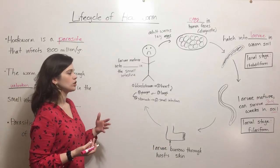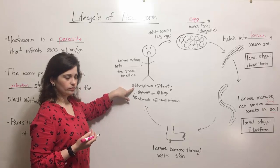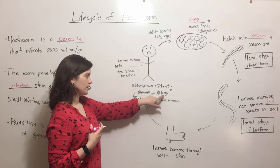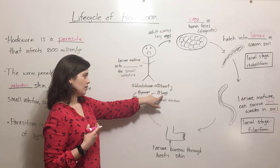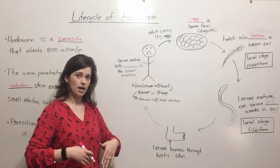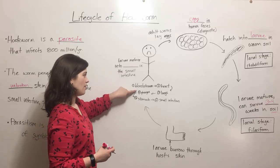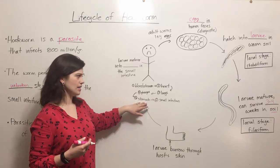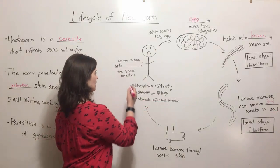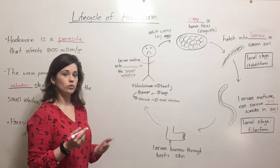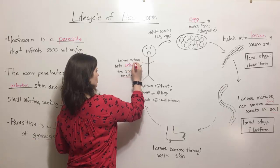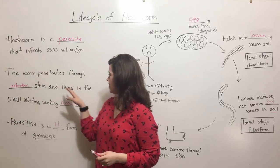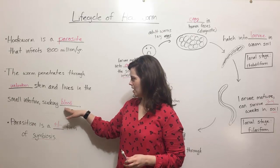Once the larvae enters the human body, it goes through a really circuitous route. First it enters the bloodstream. From the bloodstream it moves to the heart. From the heart it can travel through the body to the lungs. Then the larvae actually gets coughed up — from the lungs up to the pharynx — and then it gets swallowed and goes to the stomach. The larvae that survive the stomach acid conditions make it to the small intestines, and it is here, in the small intestine, where the larvae mature into adults.